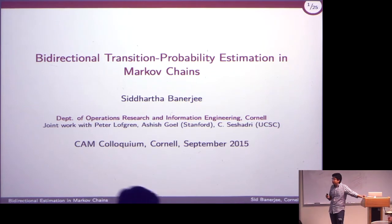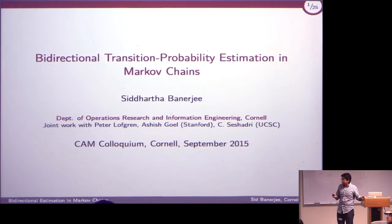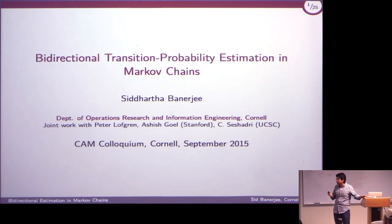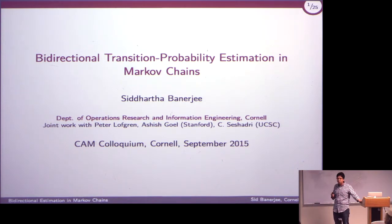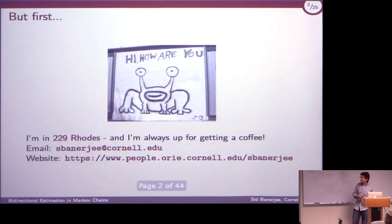I'm going to talk about some problems about estimating probabilities in Markov chains. This is joint work with Peter Loughran, who was a CS graduate student at Stanford and is now in a startup in the Bay Area. Ashish Goral was my mentor at Stanford, and part of this work was done with Seshadri Zre, who is in the CS department at UCS.